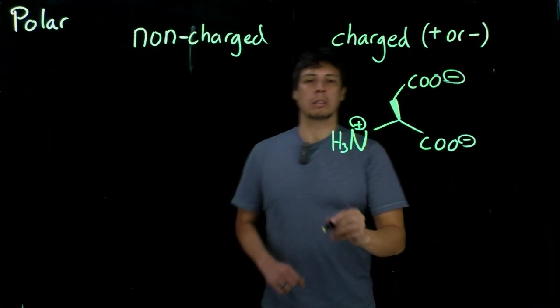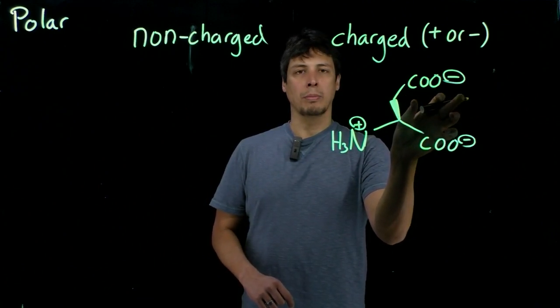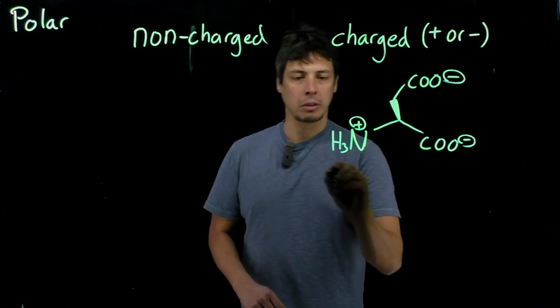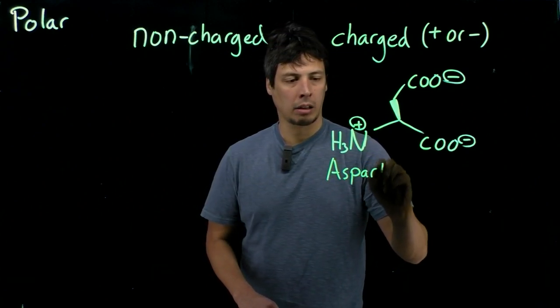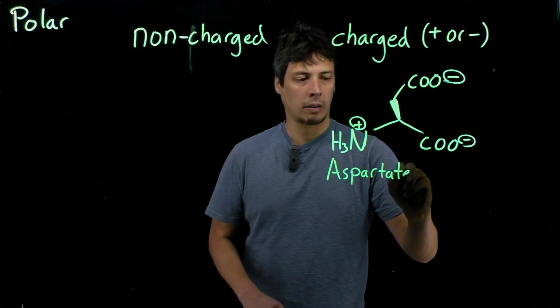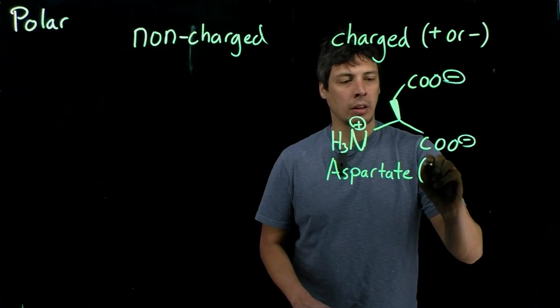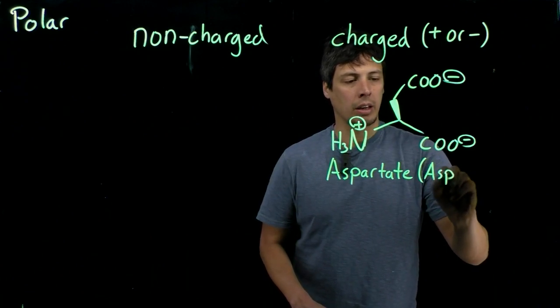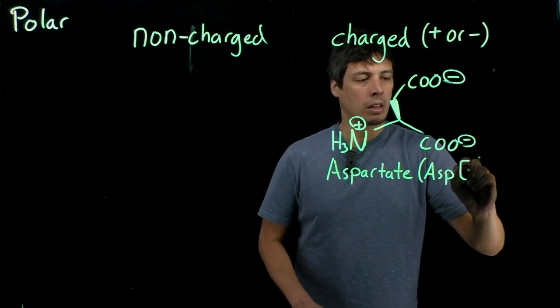All right, this is called, this has a carboxylate functional group on it with one carbon in between, and this is called aspartate or aspartic acid. That's another common name you might see for this. Three-letter code for this is ASP. One-letter code is D.